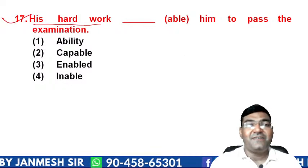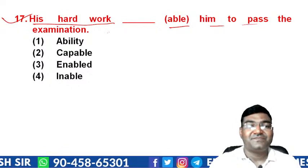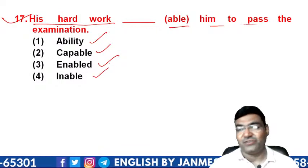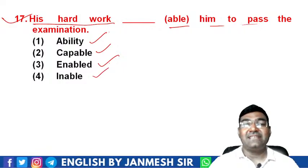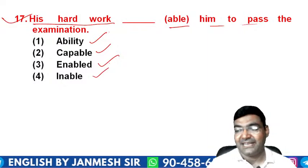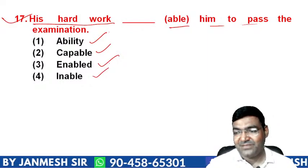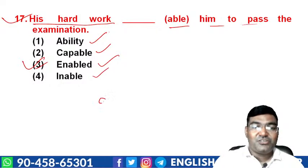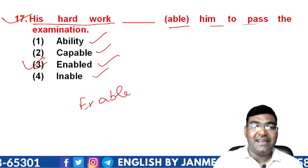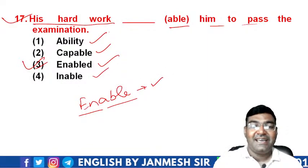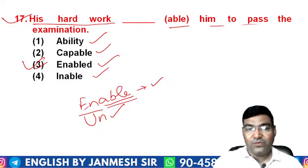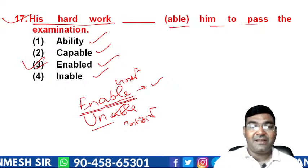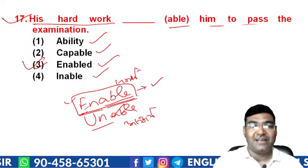Question 17: 'His hard work _____ him to pass the examination.' Options are 'ability', 'capable', 'enabled', or 'enabled' again. We need a verb here. 'Enable' means to make someone capable of doing something. Adding 'en-' to 'able' gives 'enable', and 'un-' gives 'unable' — the opposite. Here 'enabled' fits as the past tense verb. The answer is option 3 — 'enabled'.